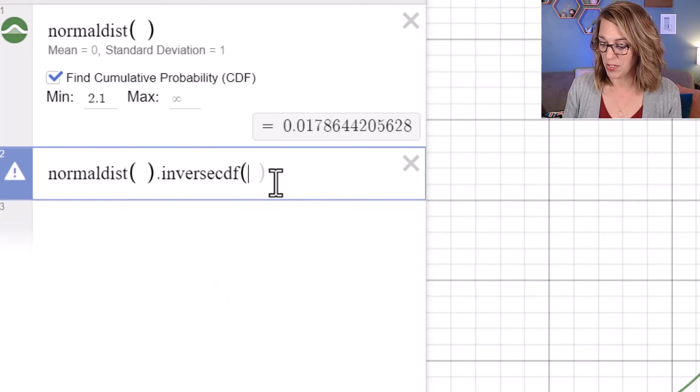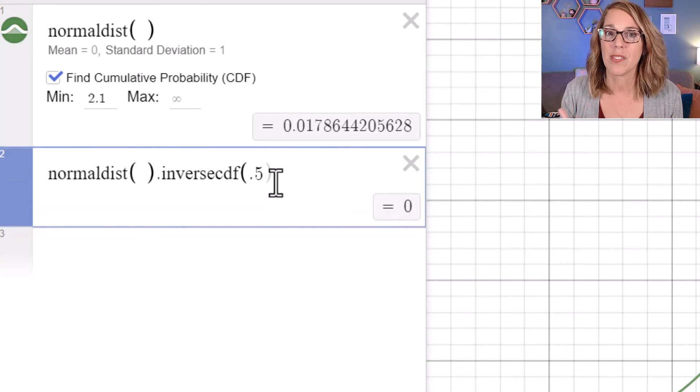If I do an inverse norm for an area of 0.5, it gives me that zero back that I expected.